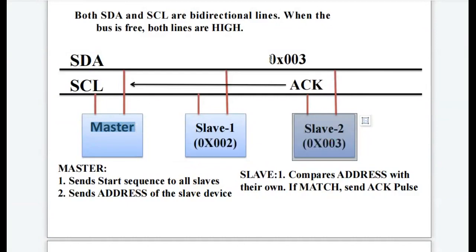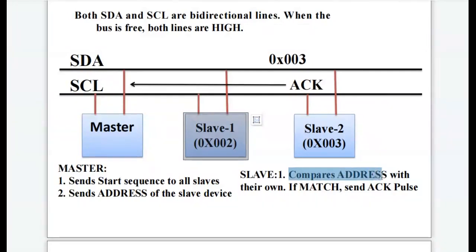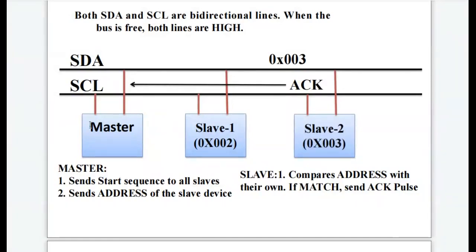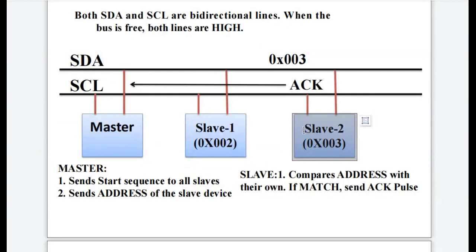The master sends slave address 0x003 on the SDA line. Upon receiving the address, all slaves — slave 1 and slave 2 — compare the received address with their own. If the address matches, an acknowledgement pulse is sent back by the slave to the master. In this case, the address matches slave device 2, so slave 2 sends the acknowledgement pulse to the master.